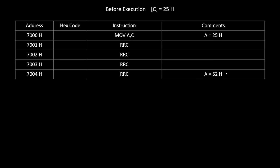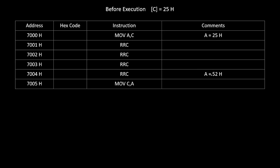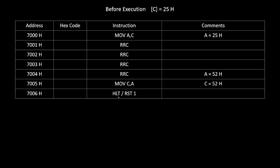The result is in the A register, but we want the final answer in the C register. So finally we write MOV C, A — the value of A (52H) gets copied into C, so C register becomes 52H. We then write HLT to stop execution of the program.